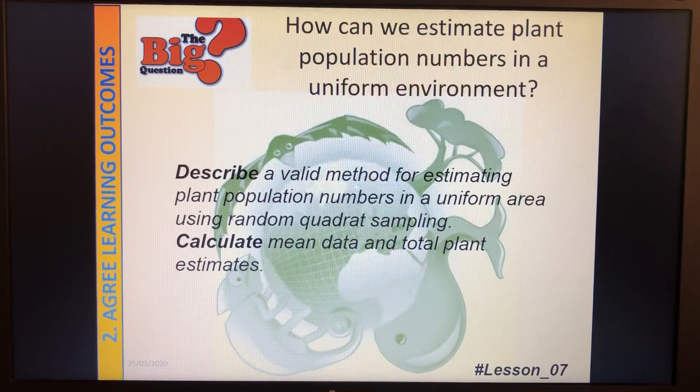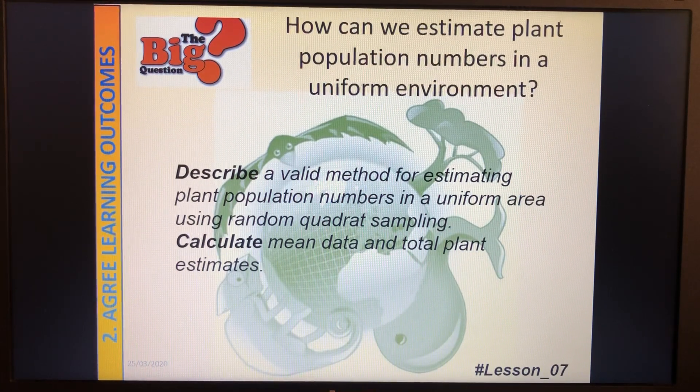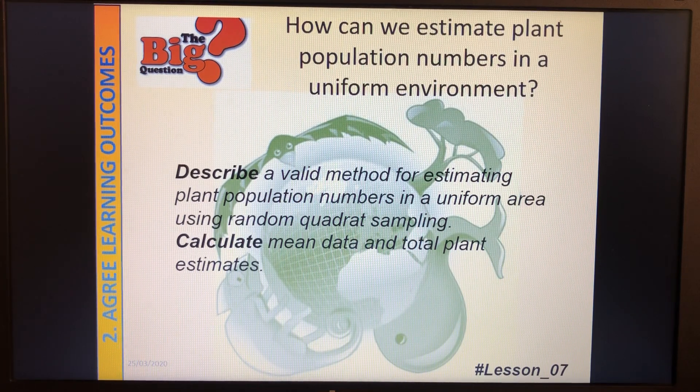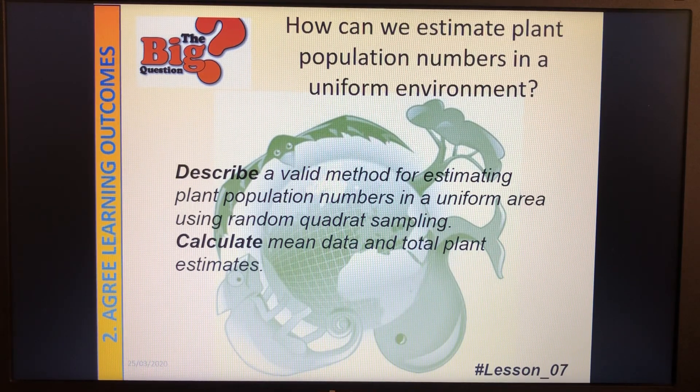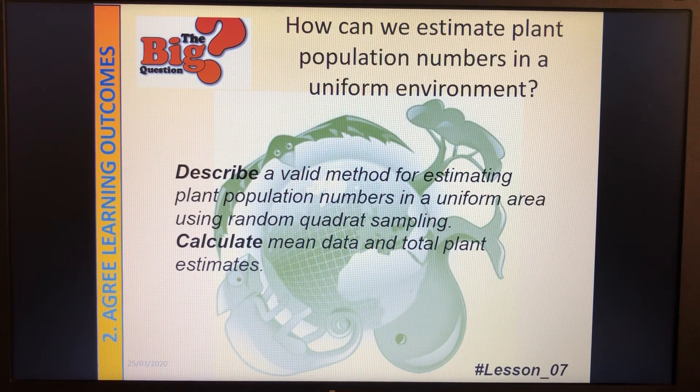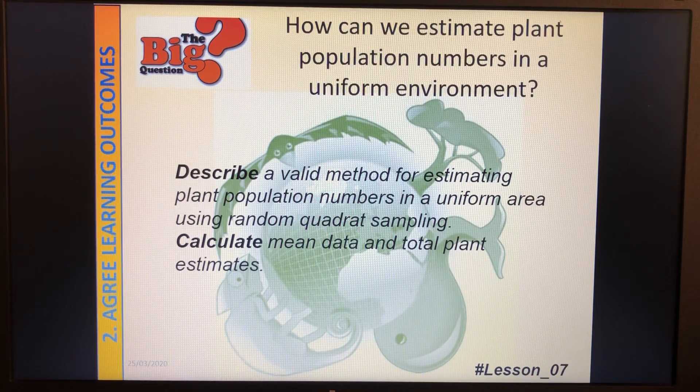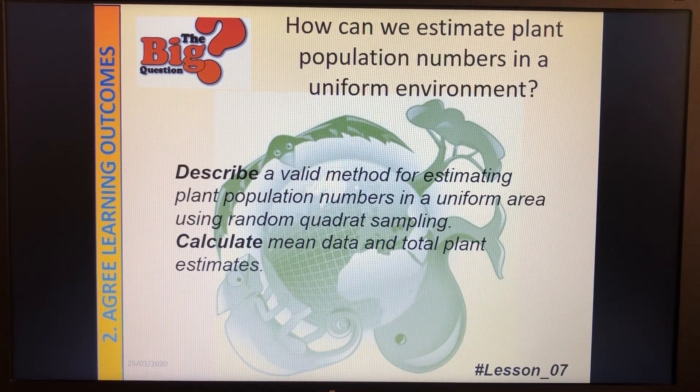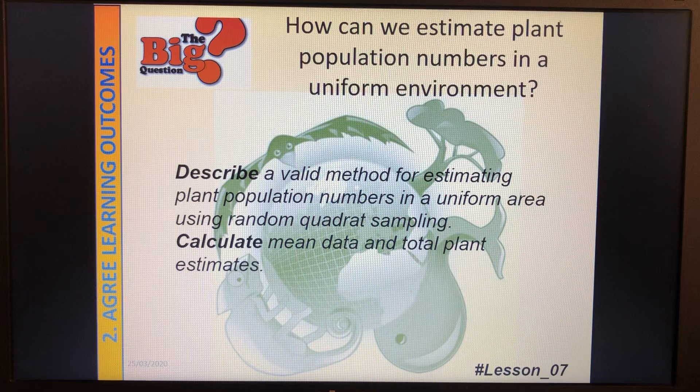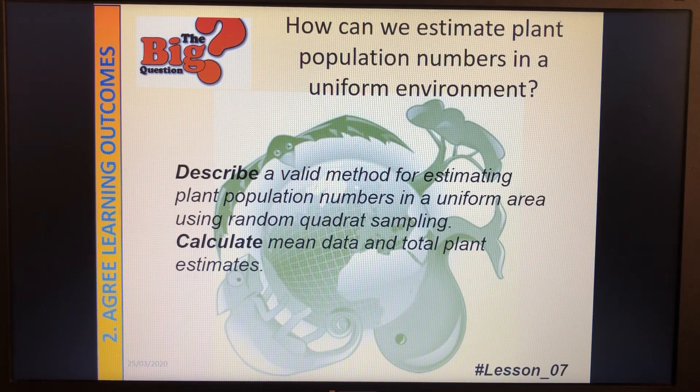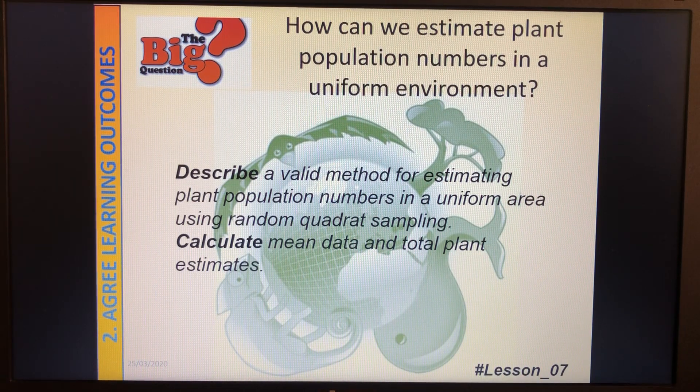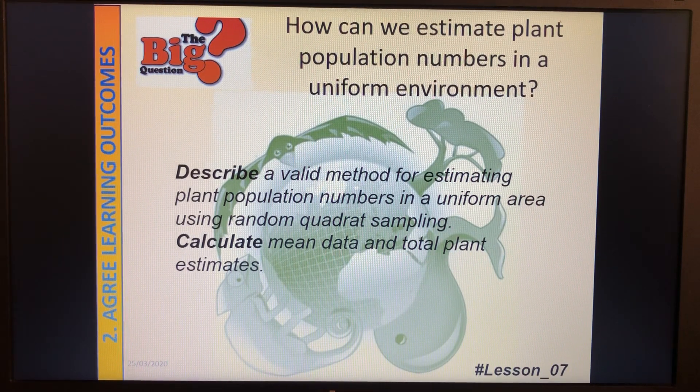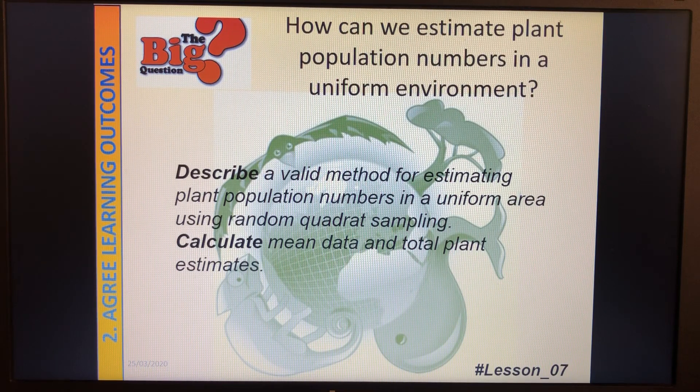Now you probably remember doing this from Year 7 where we're looking at estimating plant populations across a uniform area. By uniform area we mean an area that's kind of quite similar across the whole area, there's nothing different about it so you'd expect a quite even distribution of plants. We use the quadrats and we randomly place them and then we can estimate how many plants are in that area. So time to get those books out, time to write the title.